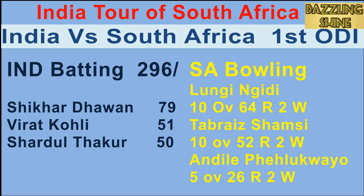South Africa have won this match comfortably by 31 runs. South Africa have been in control since taking India's second wicket, and their bowling attack proved they deserve this victory. India's key contributors were Dhawan with 79, Kohli with 51, and Thakur with 50. From the bowling side, Nagidi, Shamsi, and Pell Q each took two wickets.